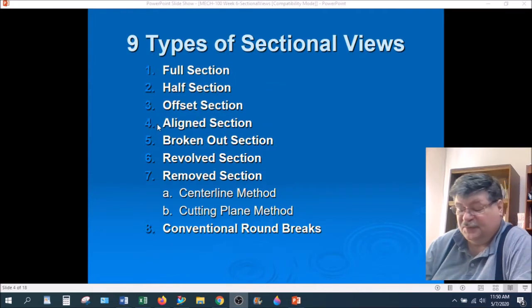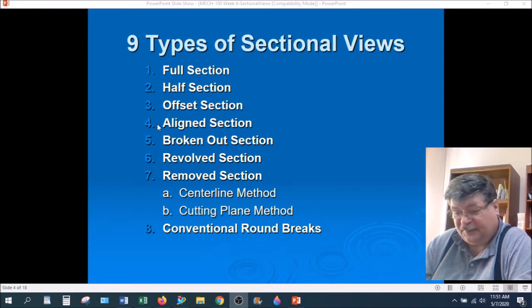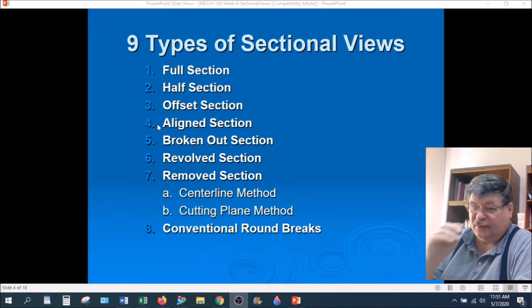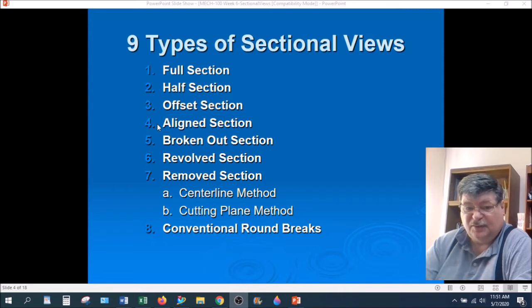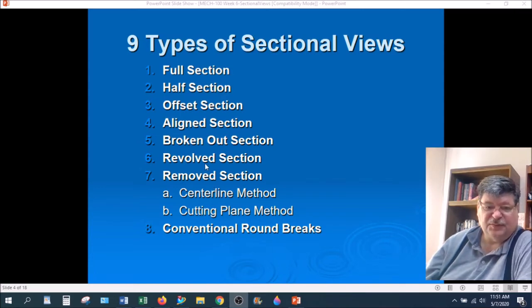There are nine types of sectional views. These are the conventional names for section views. You may find these functions in CAD programs like NX, but they may be named something different. Like in NX, a full section and an offset section can both be used with the section command. In NX, an aligned section is actually called a revolved section, which just confuses things because there is a revolved section. But these are the nine types of sectional views of which examples are given in the second point note.